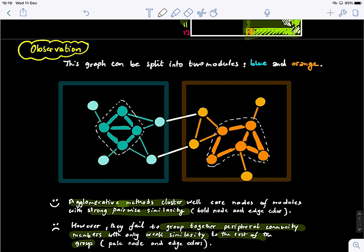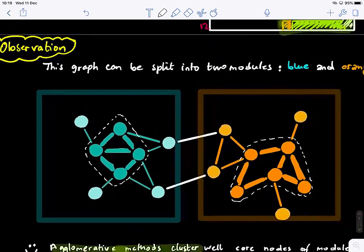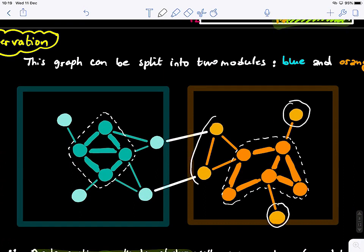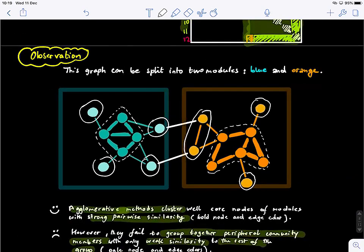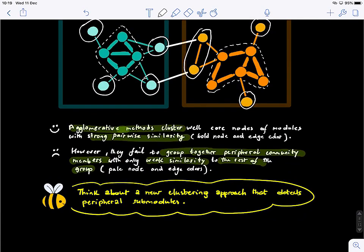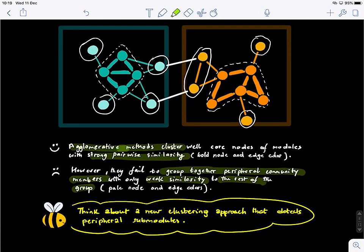And what you guys notice is that if we use agglomerative method, we'll have only two modules, and the algorithm will not be able to spot out the peripheral nodes to the cores. So these actually unitary modules that we would like also to spot out. So this is one disadvantage of using hierarchical method. So any ideas about how to use a new clustering approach that detects peripheral submodules?